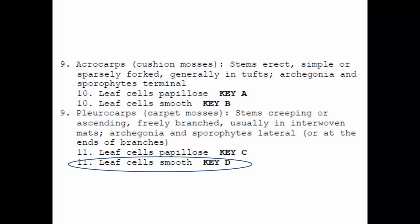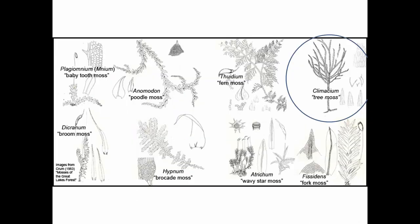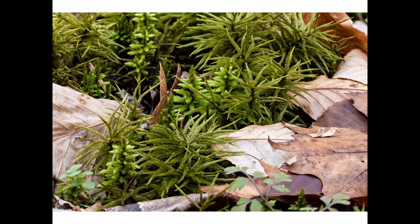Now let's look at smooth-leaved pleurocarps. Here's one that's especially distinctive: Climacium. Climacium looks like little trees — a very robust moss. It is really a pleurocarp; there are horizontal stems like runners, and then upright branches that branch again, so they look like little trees. Although it grows upright, it is indeed a pleurocarp.